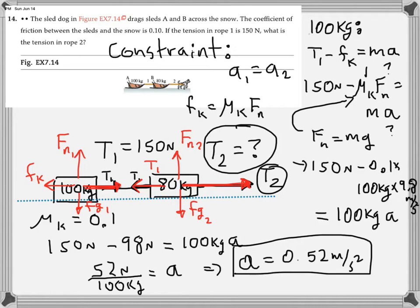Let's look at Newton's second law in the x-direction for the 80-kilogram sled. I just noticed that I'm missing a force — that can happen. You always have to be checking and double-checking your work. When I did the free body diagram for the 80-kilogram block, I left out one of the forces. What I left out is friction, because this sled is also rubbing against the ground, just like the 100-kilogram sled. So that one I could call FK2. In addition to tension T1 pulling to the left, we're going to have kinetic friction acting on the 80-kilogram sled — five forces total.